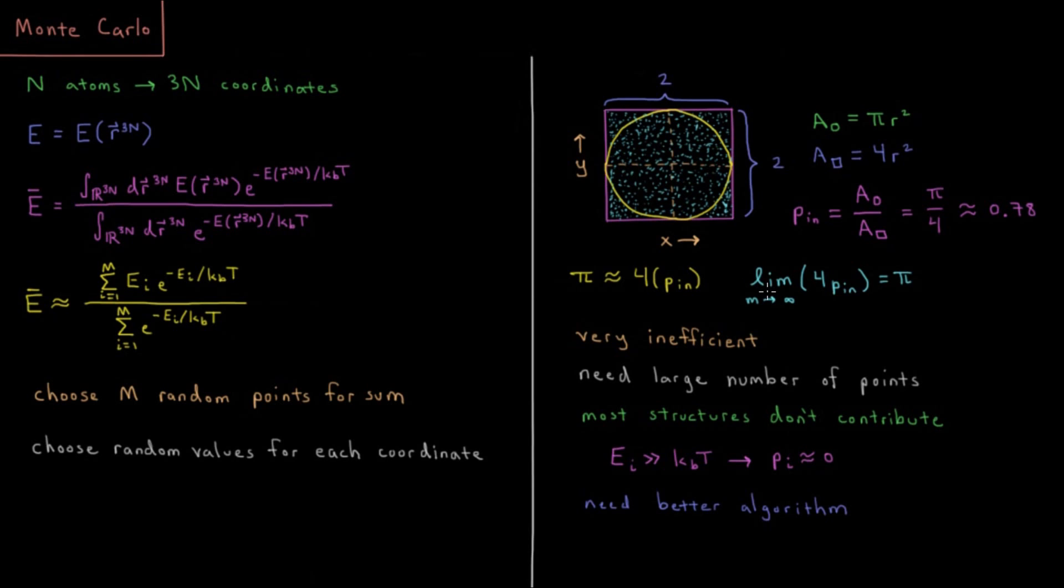So in the limit of a very large number of randomly chosen points, 4 times the probability that the points are inside the circle, so the number of points inside the circle divided by the number of points, the limit as that number of points gets very large is going to be equal to the value π.